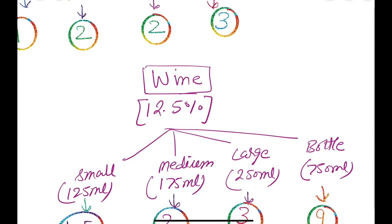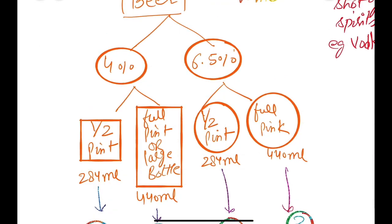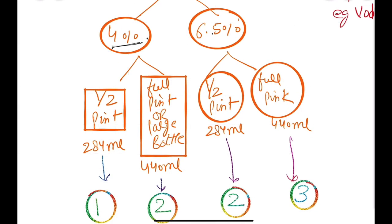Let's have a quick recap. Beer comes in two concentrations: 4% mild and 6.5% strong. Half pint is 284 ml, full pint is 440 ml. For 4% mild: half pint is 1 unit, full pint is 2 units. For 6.5% strong: half pint is 2 units, full pint is 3 units. Remember this as the formula: 1, 2, 2, 3.